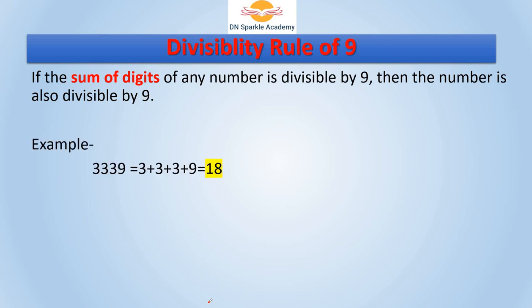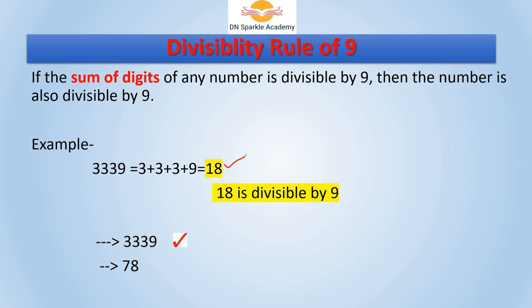In this example, the sum of digits is 18, and 18 is divisible by 9, so the whole number is also divisible by 9. For 78, 7 plus 8 is 15, and 15 is not divisible by 9, so 78 is not divisible by 9. For 54, 5 plus 4 is 9, and 9 is divisible by 9, so 54 is divisible by 9. This rule is similar to the divisibility rule of 3.